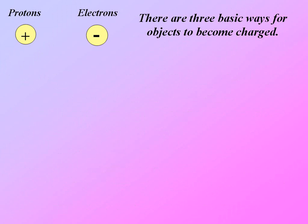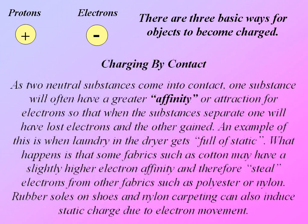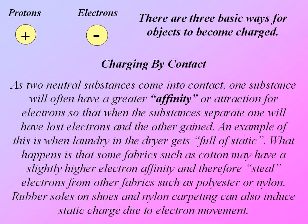There are three basic ways for an object to become charged. The first way is charging by contact. As two neutral substances come into contact, one substance will often have a greater affinity or attraction for electrons, so that when the substances separate, one will have lost electrons and the other gained.